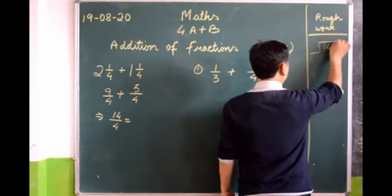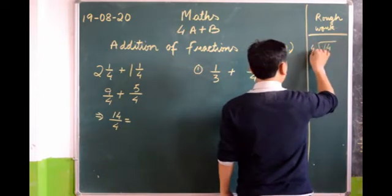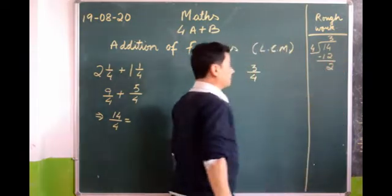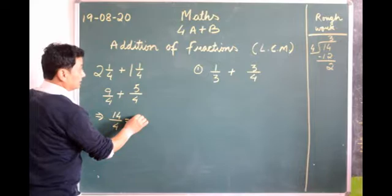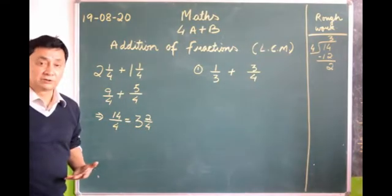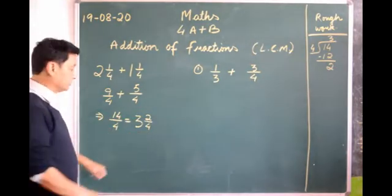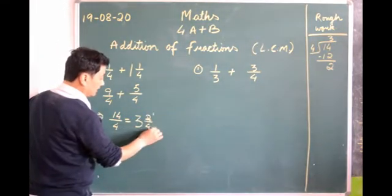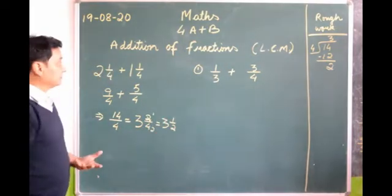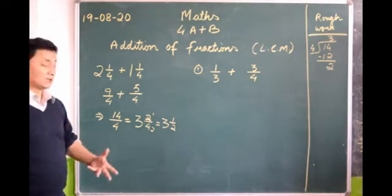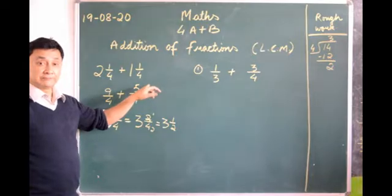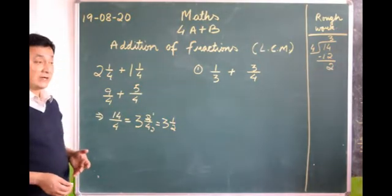So we go to the rough work. We are reducing here: 4 threes are 12, and 2 — so the answer is 3 and 2/4. But some of you who know how to reduce can reduce it to 3 and 1/2. The sums we did in class 3 and class 4 were similar to these, where the denominators are the same, so we don't have to find LCM.